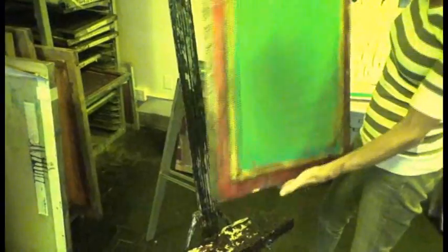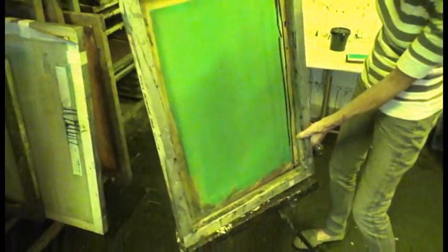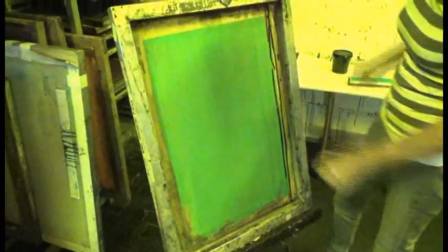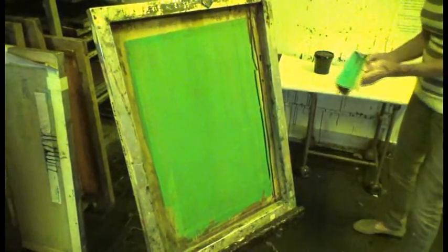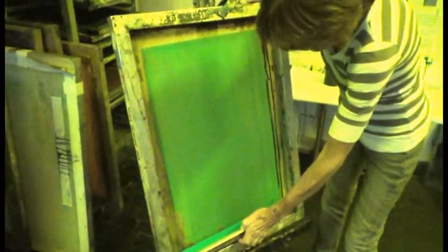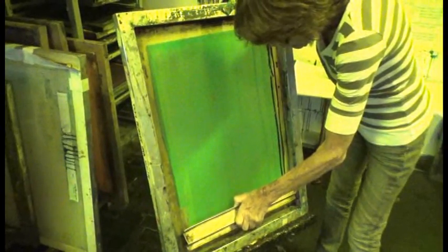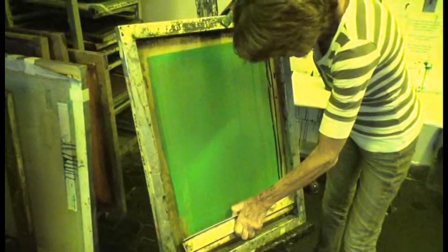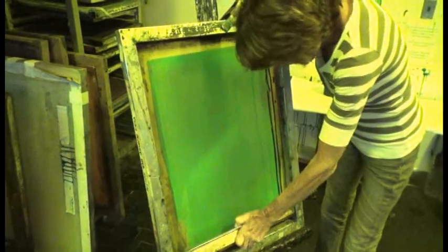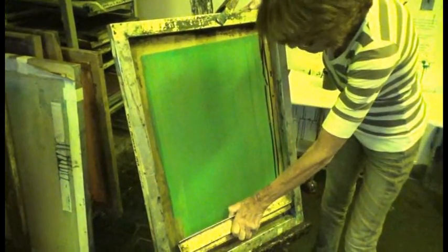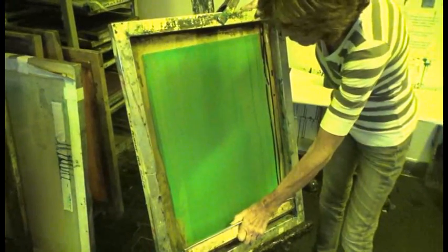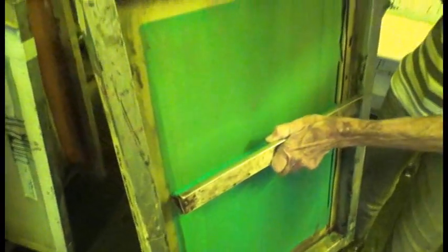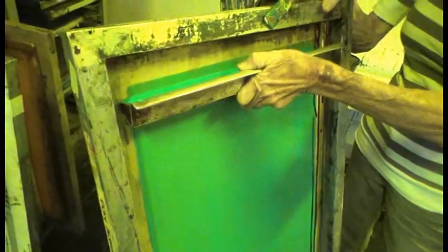I'll take this out of the clamp and rotate it so I'm going the opposite direction. I'm going to put the next coat on the opposite side of the screen, the squeegee side. Same as before, about an inch from the top with pressure so the emulsion doesn't sneak under the edge of the coater. Tip it until the emulsion is touching all along the edge.